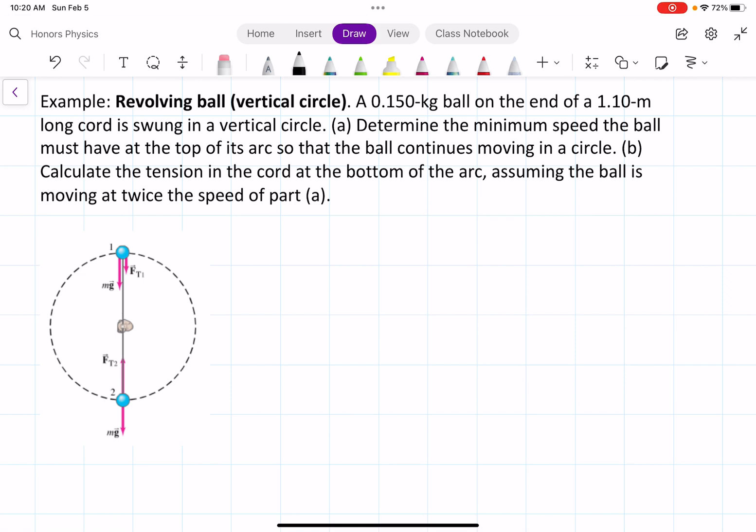Determine the minimum speed the ball must have at the top of its arc so that the ball continues moving in a circle. And B, calculate the tension in the cord at the bottom of the arc, assuming the ball is moving at twice the speed of part A.